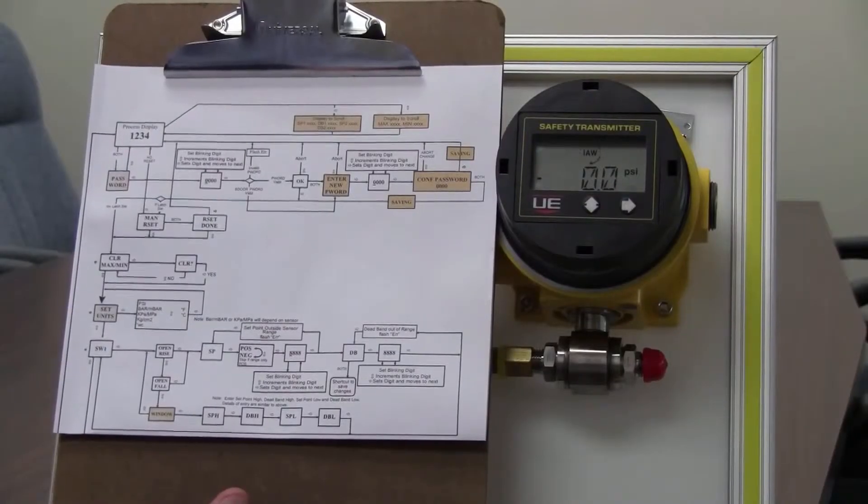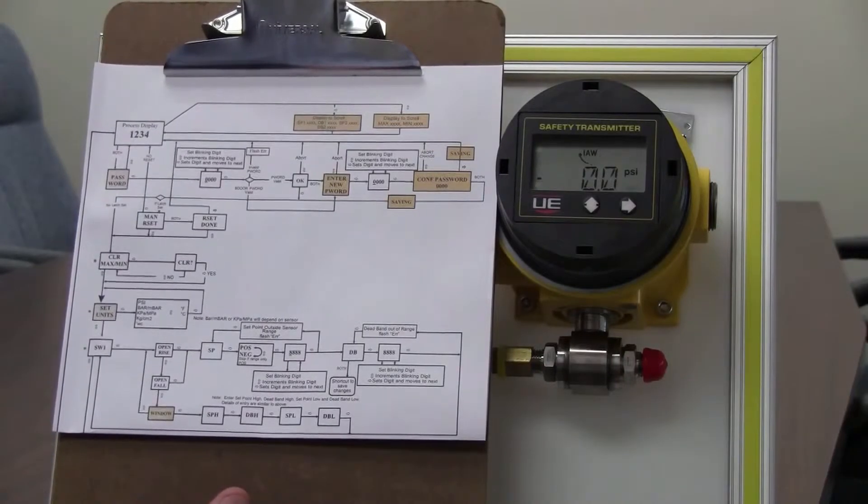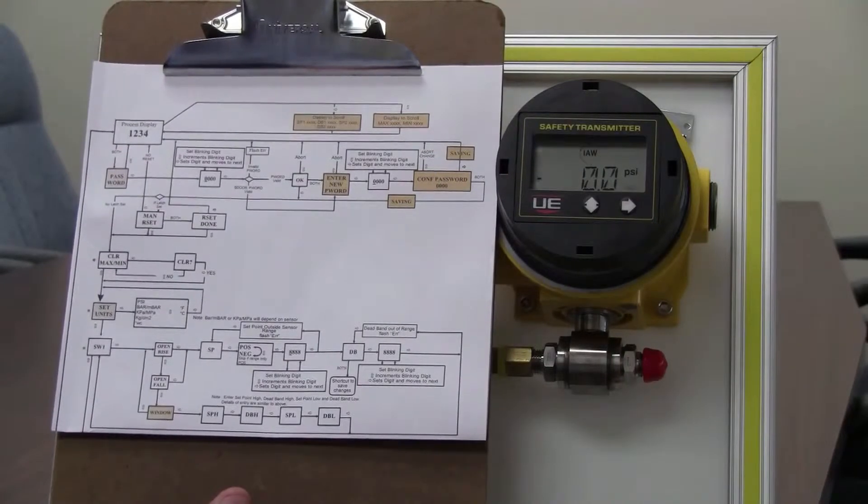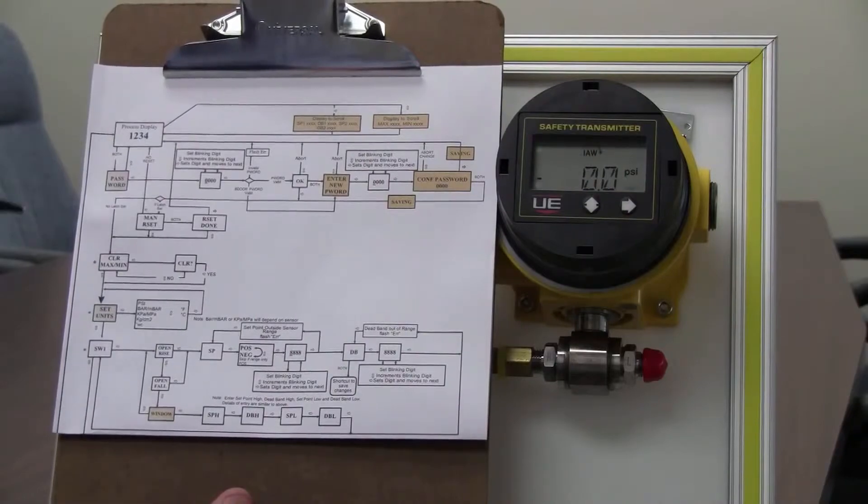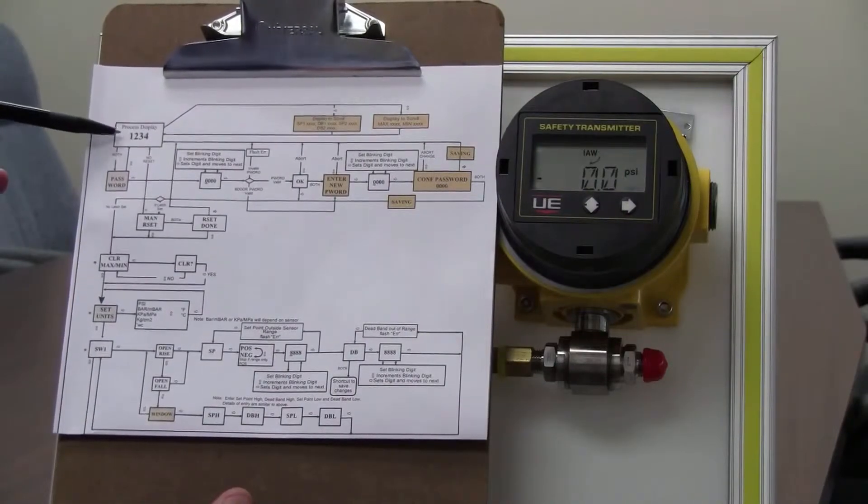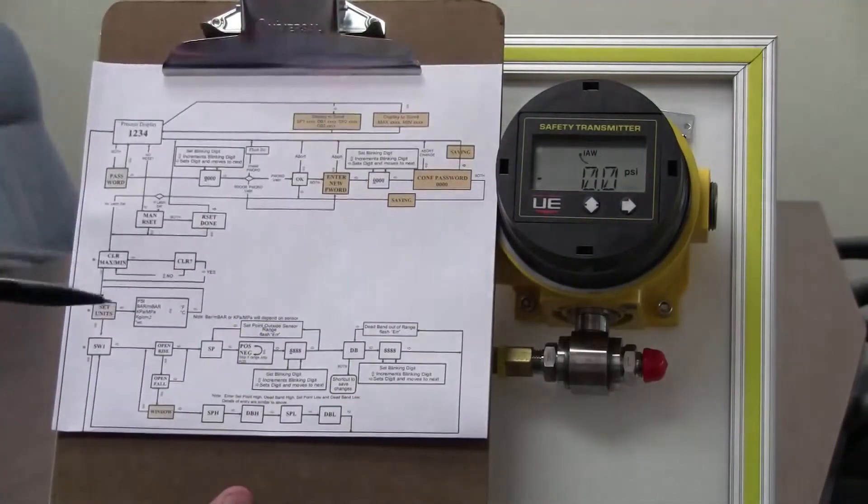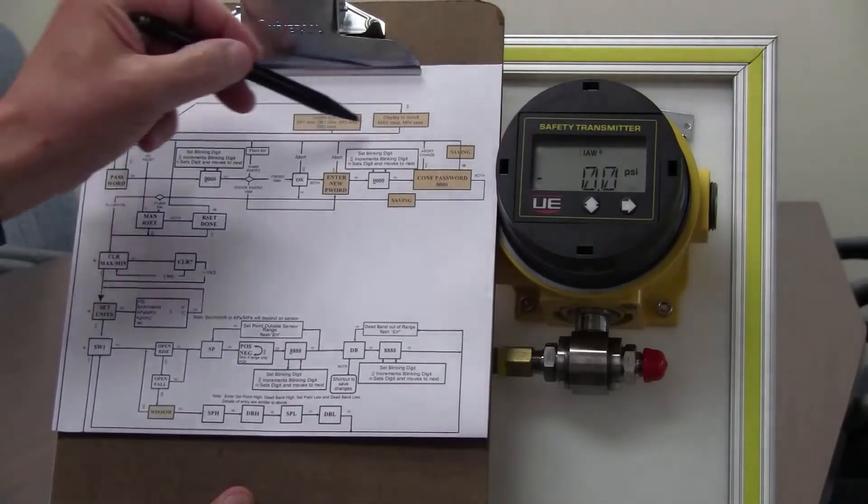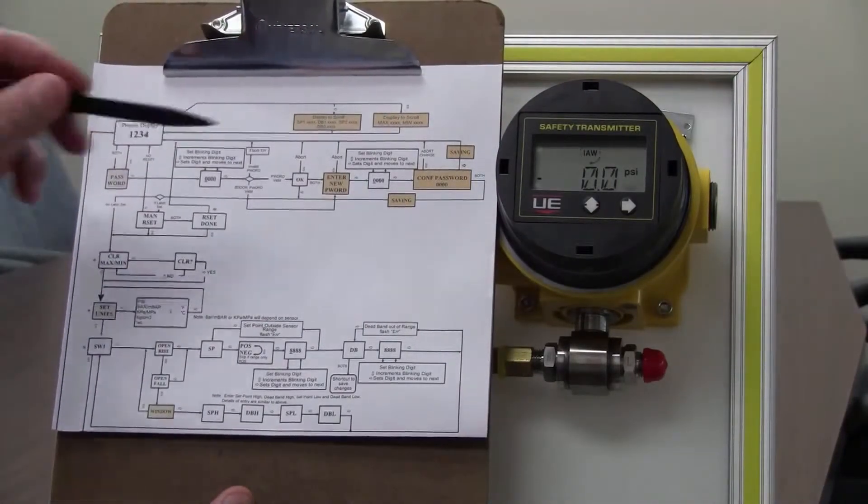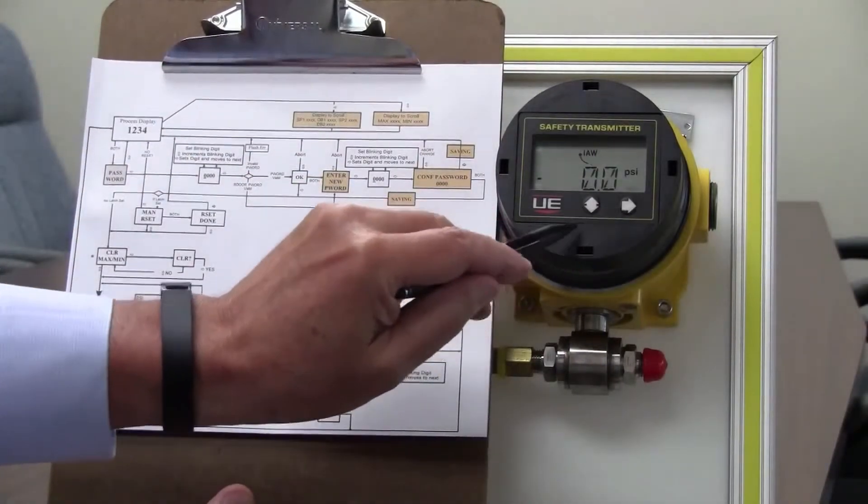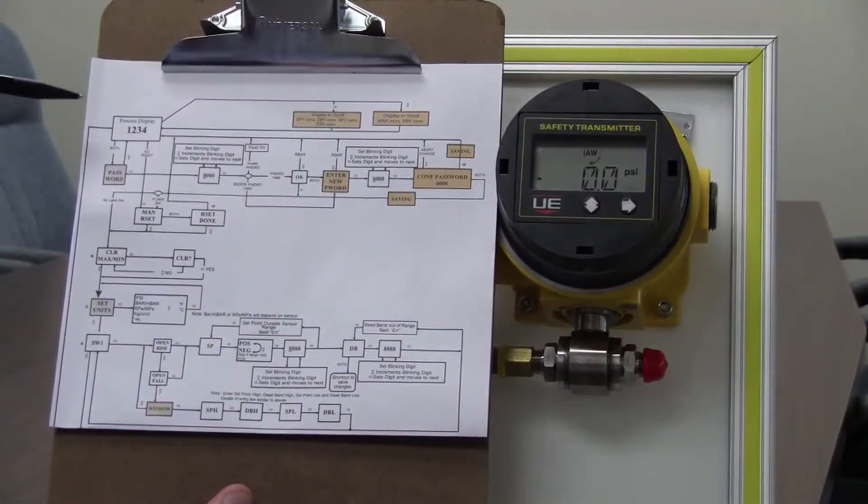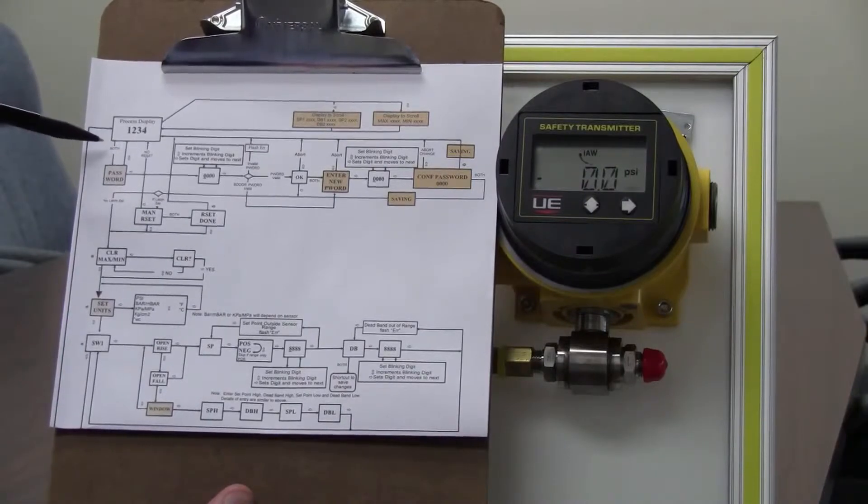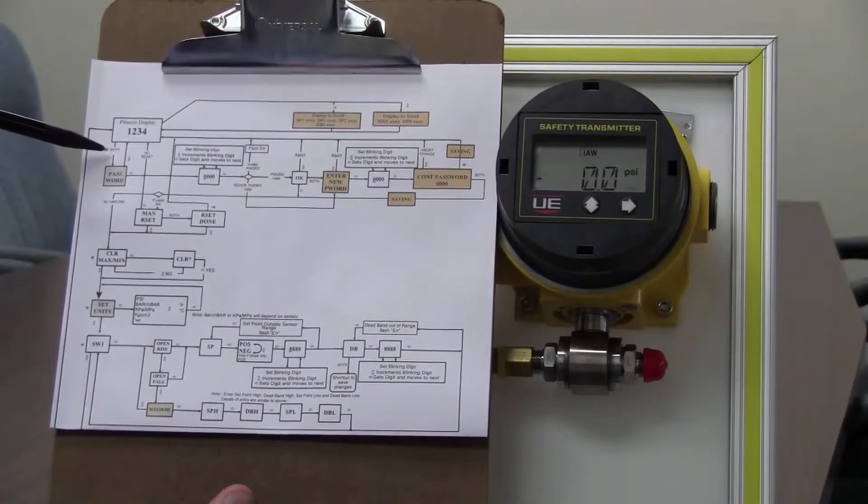From the installation and maintenance manual I have the programming flow chart here and let me just show you how to work this chart. We start with the process display which is the same as our display over here and we can move either to the right into the menu or down in the menu and those correspond to these keys on the front of the instrument. So for example, the first thing we might want to do is press both keys simultaneously.